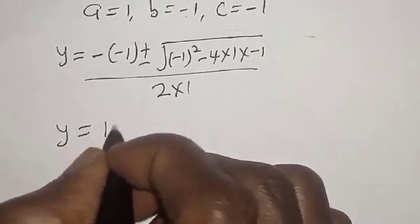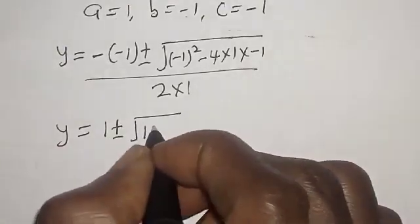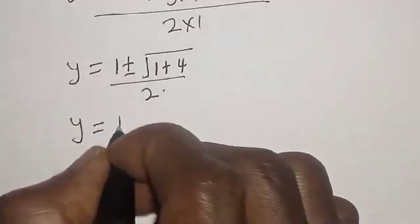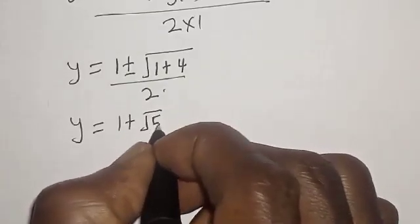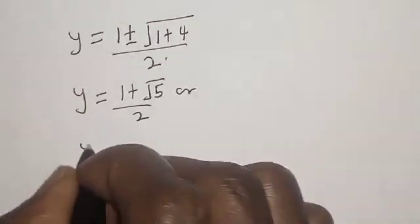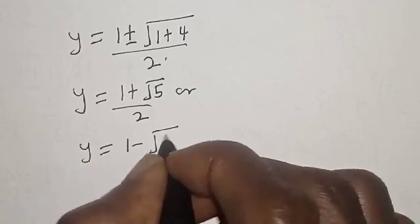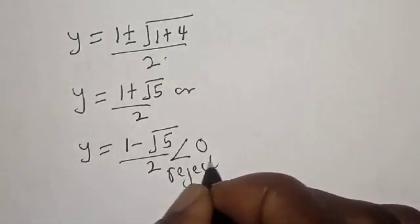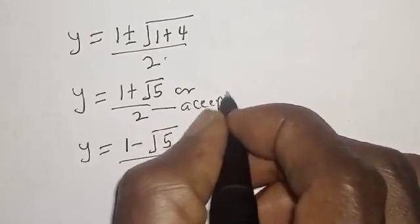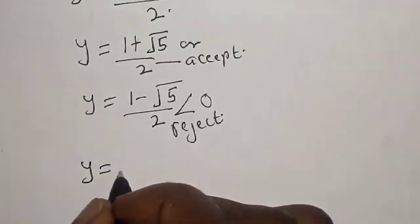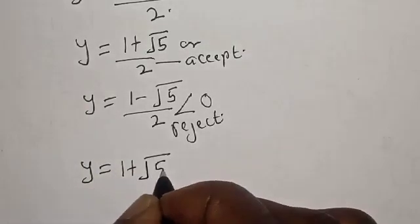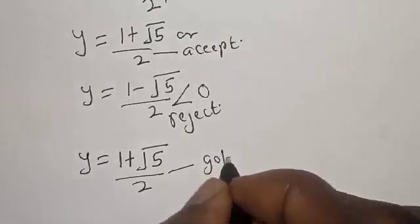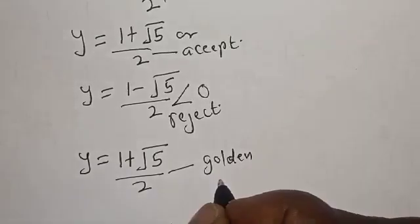Now y is equal to 1 plus or minus square root of 1 plus 4, over 2. So y equals 1 plus square root of 5 over 2, or y equals 1 minus square root of 5 over 2. The second solution is less than 0, so we reject it and accept y equals 1 plus square root of 5 over 2. This is called the Golden ratio.